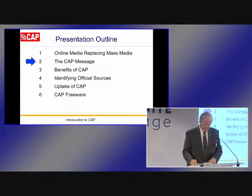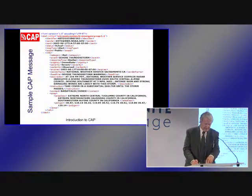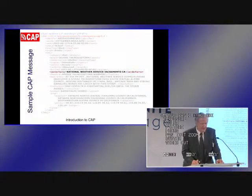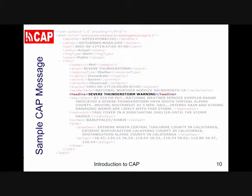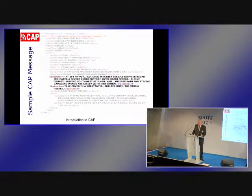Now let's look at the content of that form — an actual CAP message with its XML tags. The CAP message has the sender name: National Weather Service, Sacramento, California. The headline is 'severe thunderstorm warning.' In the description, we see this storm is likely to have hail, intense rain, and strong damaging winds. And the instruction says: take cover in a substantial shelter until the storm passes.